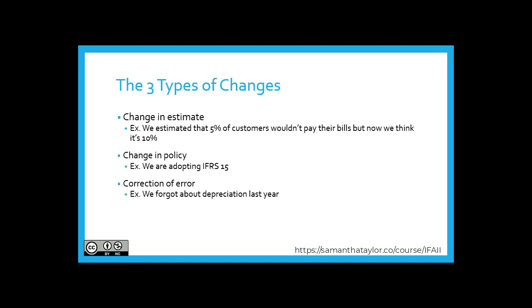There are three types of changes that we will be looking at. Number one, a change in estimate — for example, if we originally estimated that 5% of customers wouldn't pay their bills, but now we have reason to believe that it's closer to 10%. Number two, a change in policy — for example, we are adopting IFRS 15. Number three, correction of an error — for example, we simply forgot about depreciation last year and the books were finalized.